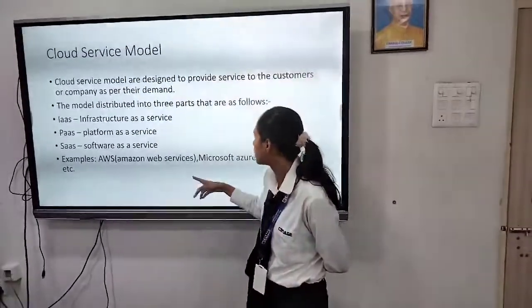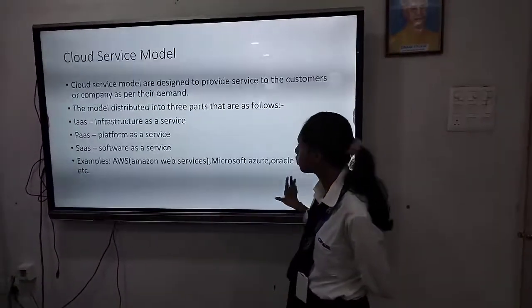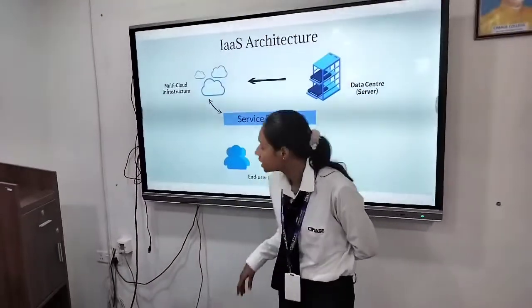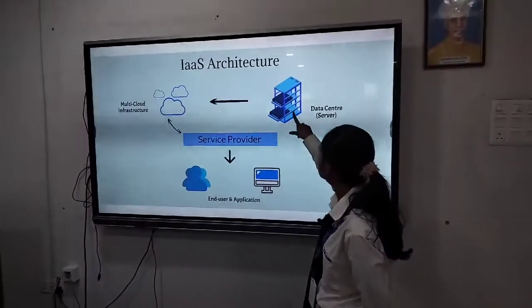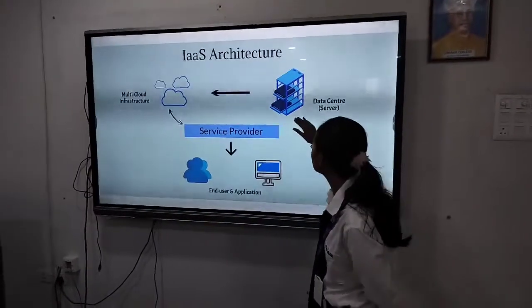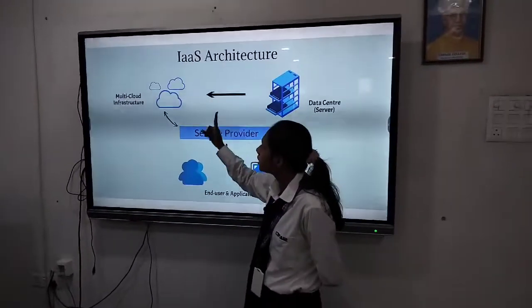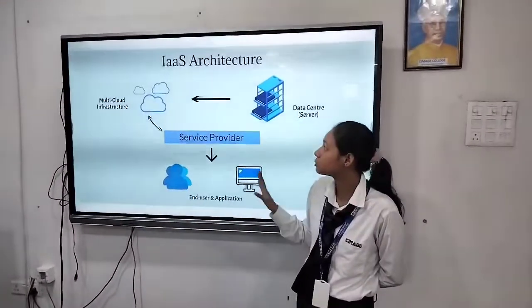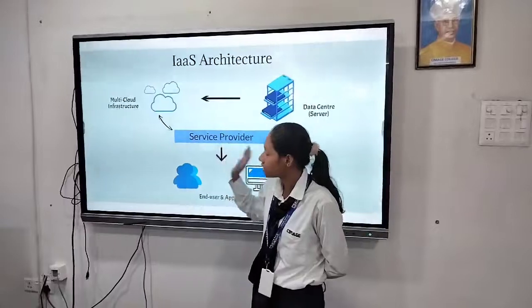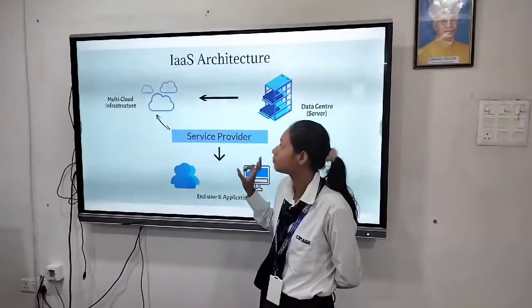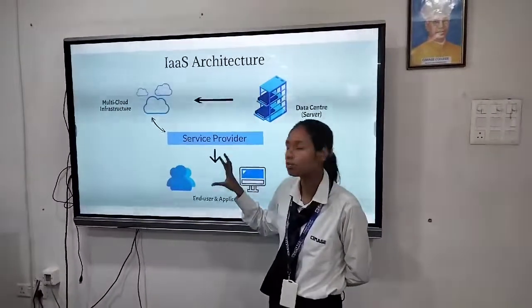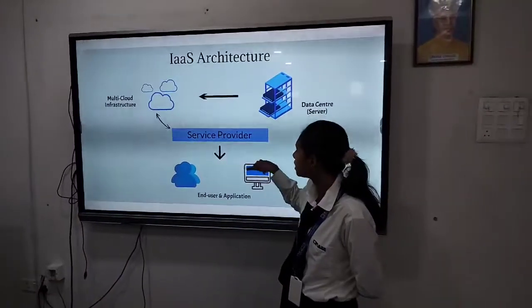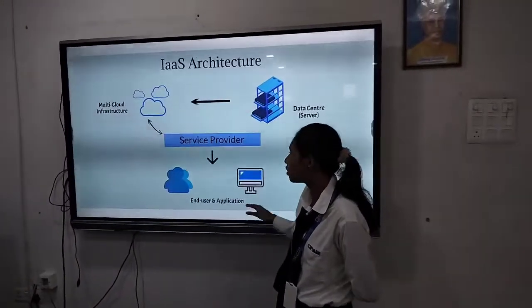Here are some examples: AWS, Microsoft Azure, and Google Cloud. This is a diagram showing a data center where data is stored, and multi-cloud infrastructure. Multi-cloud infrastructure is basically an infrastructure where public and private clouds are both combined, and this provides service to the end user or application.